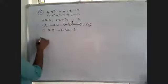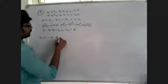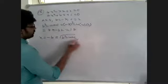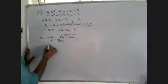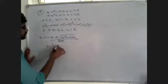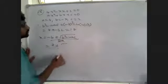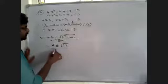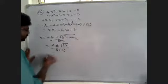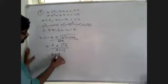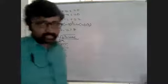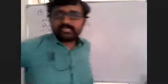Now x is equal to the formula: minus b plus or minus root over b squared minus 4ac, divided by 2a. Since b is negative, minus b will be positive 7, plus or minus root over 17, divided by 2 into 4. So this gives us 7 plus or minus root 17 by 8.